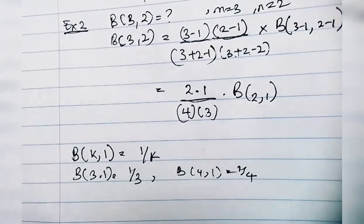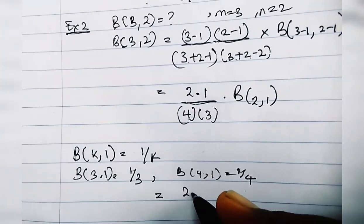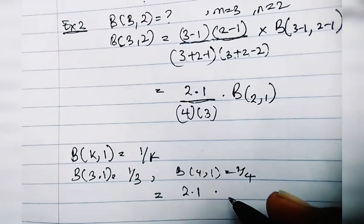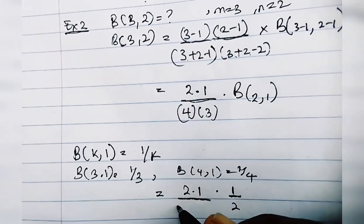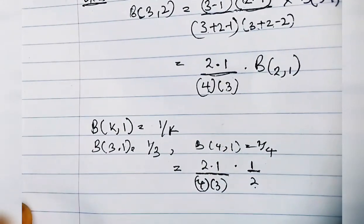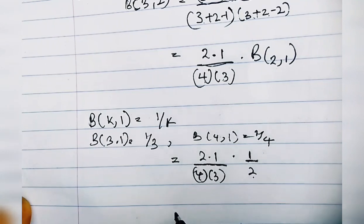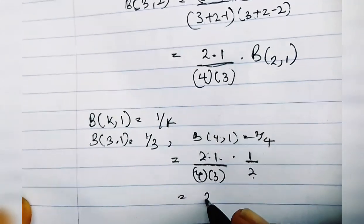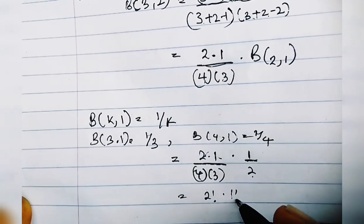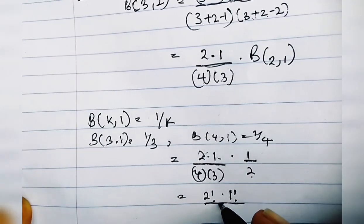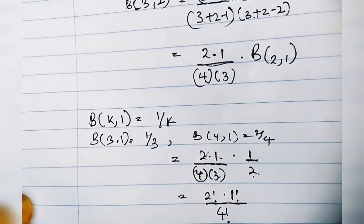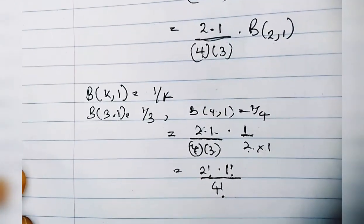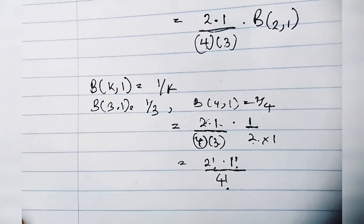We have Beta(2,1) = 1/2, so substituting: the expression becomes 2 times 1 times (1/2), divided by 4 times 3. We can express this using factorials: 2! times 1! divided by 4 times 3 times 2, which is 4!. So Beta(3, 2) = 2! times 1! divided by 4!.